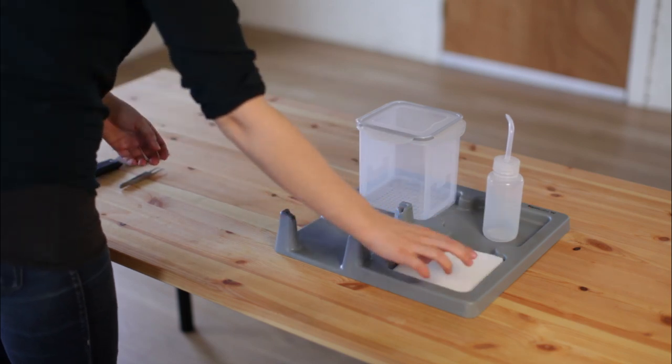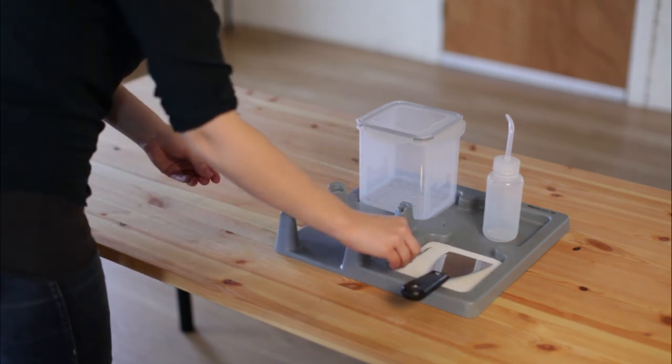Place the absorbent foam pad in one of the spots on the tray. Lay out the scraper and the tweezers.